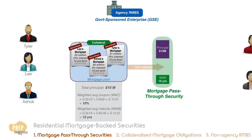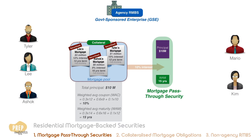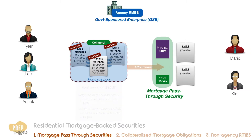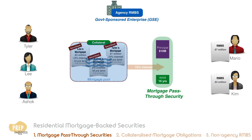Let's say the security is sold to two investors, Mario and Kim. Mario placed a principal of $7 million, while Kim placed the remaining $3 million.